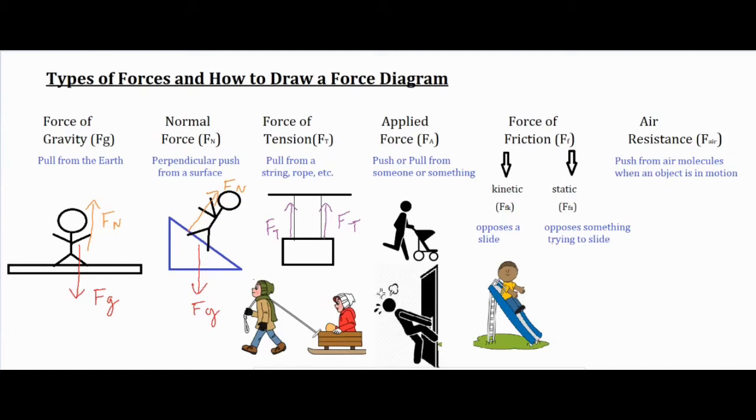In our second picture over here we have a person pulling a sled. Again it's a rope-like object, it's being pulled, the arrow goes straight away from the object, there's your FT, the pull from the rope.